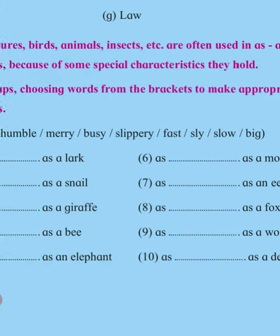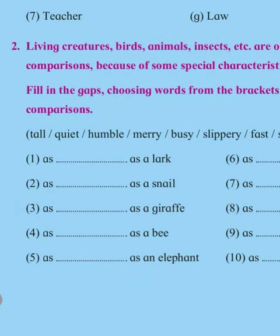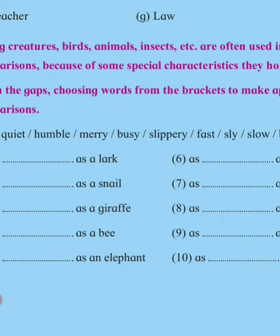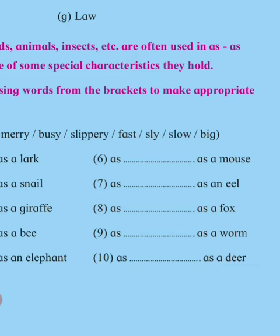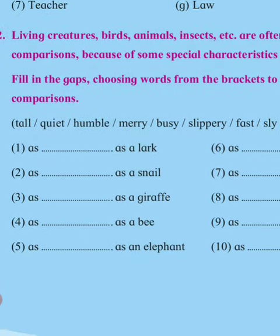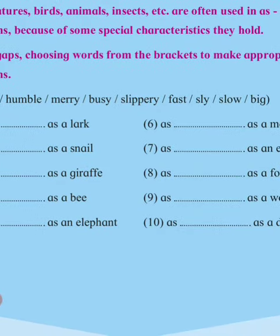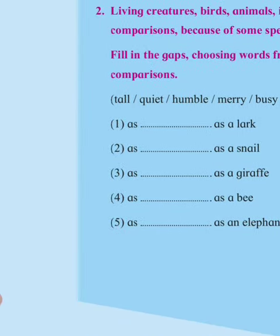Living creatures are often used in similes and comparisons. For example, 'as red as a rose' — like that — because of some special characteristics they hold. There is a comparison or similar characteristics between the two. Fill in the gaps by choosing words from the brackets to make appropriate comparisons. Think of the proper answer.